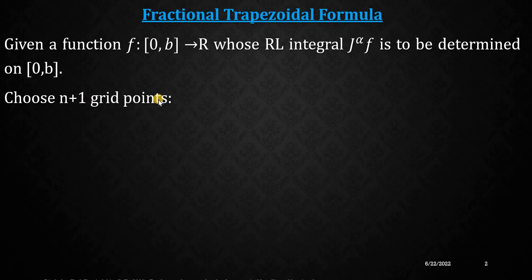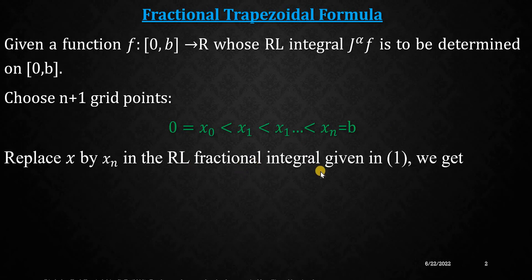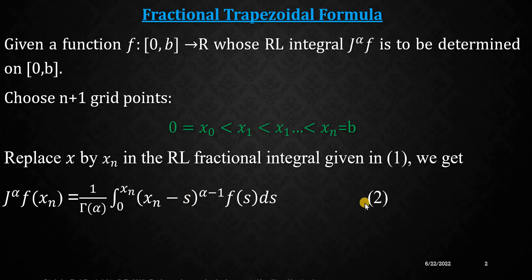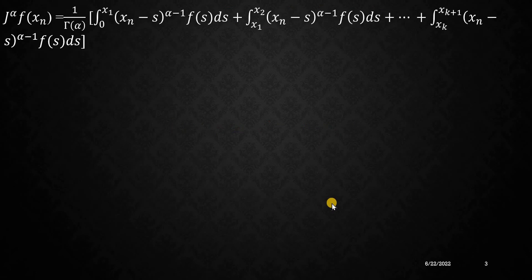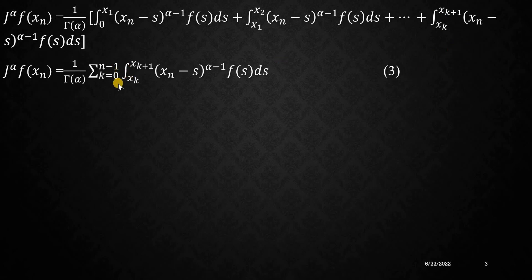For the derivation, we have considered a function whose domain is 0 to b and range is the set of real numbers. We choose n+1 grid points and hence n intervals. The lower limit x₀ is 0 and the upper limit xₙ is b. We replace x by xₙ in the RL fractional integral definition 1, obtaining equation 2. In equation 2, the integral is broken into pieces — from 0 to x₁, then x₁ to x₂, and so on, up to xₖ to xₖ₊₁ — and equation 3 uses summation notation as a compact form.